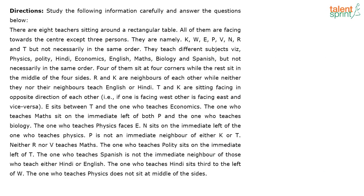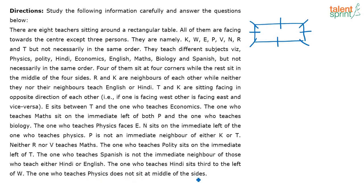What is given here: there are eight teachers sitting around a rectangular table, all facing towards the center except three persons. So there is a rectangular table with one, two, three, four, five, six, seven, eight people. The one who teaches physics does not sit at the middle of the sides, so the physics teacher is basically sitting in the corners. I'm going to assume the person teaching physics is sitting here.